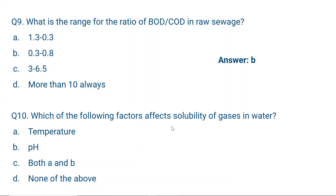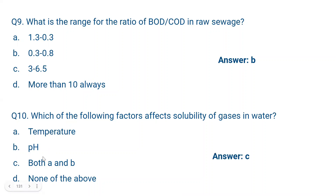Question number ten: Which of the following factors affect the solubility of gases in water? Both temperature and pH affect gas solubility in water. So the correct answer is C — both A and B.